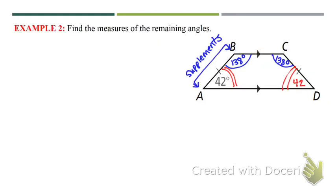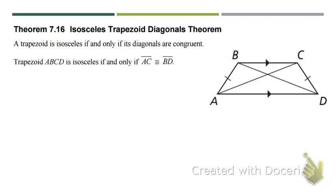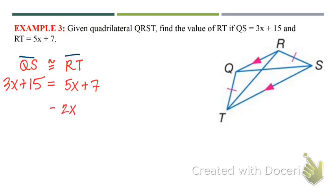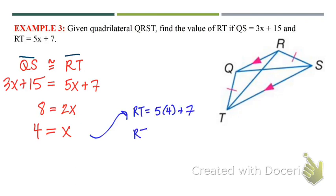The isosceles trapezoid diagonal theorem states a trapezoid is isosceles if and only if its diagonals are congruent. Given a quadrilateral, find the value of RT if QS equals 3x + 15 and RT equals 5x + 7, and we know it's isosceles. Because it's isosceles, those diagonals are congruent. So we set the two equations equal to each other and solve, then plug the value of x back in to find RT.